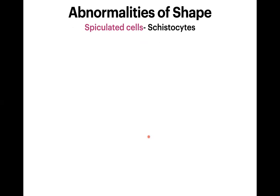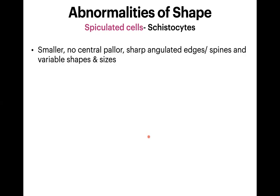First, we will talk about schistocytes. They are smaller cells — by definition they are smaller, they don't have any central pallor, and they have sharp angulated edges or spines with variable shapes and sizes. Basically, they are fragmented RBCs, which is why the shapes can be highly irregular.